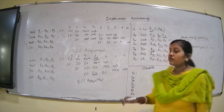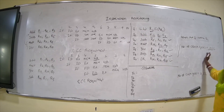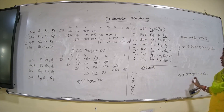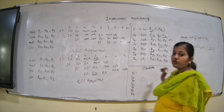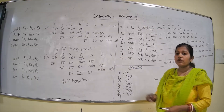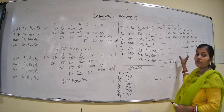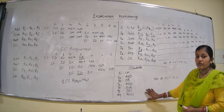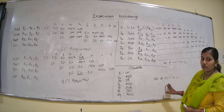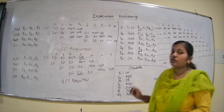For this example, without instruction reordering it will take 14 clock cycles — just draw the time-phase diagram to verify. With instruction reordering, using the solution sequence, the number of clock cycles required is 11. So without reordering we need 14 clock cycles, and after reordering we get 11 clock cycles — meaning those 3 stalls have been removed. That is instruction reordering.